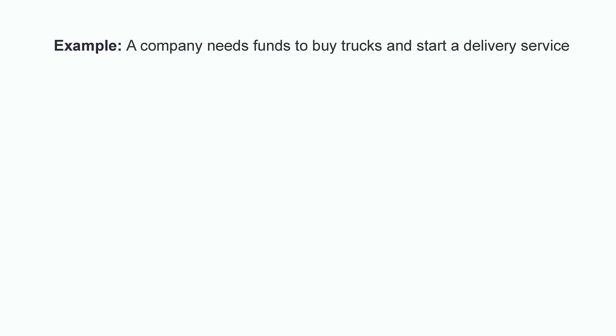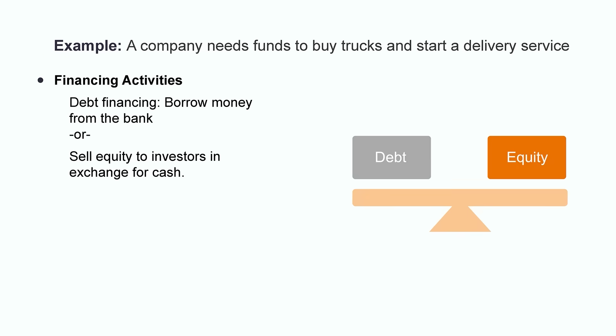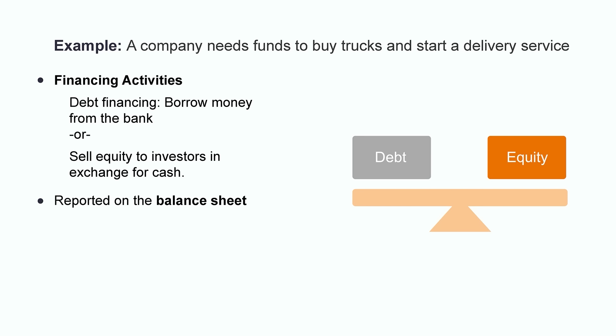Let's look at an example of how the three categories of business activities can influence external users. Say a company decides to start a delivery service but doesn't have the funds to buy a fleet of delivery trucks. They have a couple of options: either borrow money from the bank through debt financing, or sell equity to investors in exchange for cash. These are both financing activities and would be reported on a company's balance sheet. Before providing financing, the external users — in this case banks or investors — would likely want to see the company's financial statements to understand their financial health.